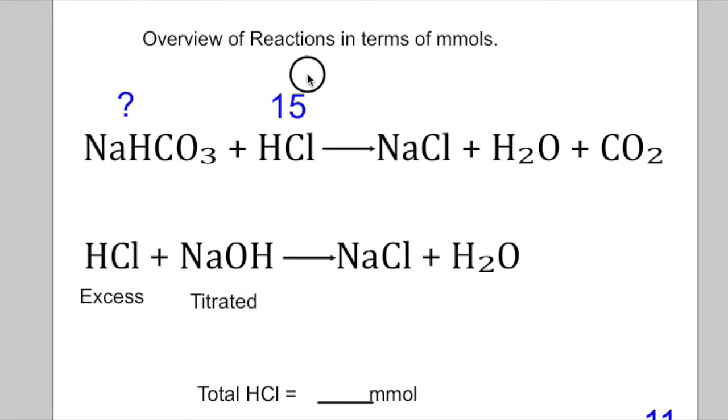So let's just say you measure out 15 millimoles, and remember, that's excess HCl. So we're going to consume all the baking soda, and we've added 15 millimoles of HCl.